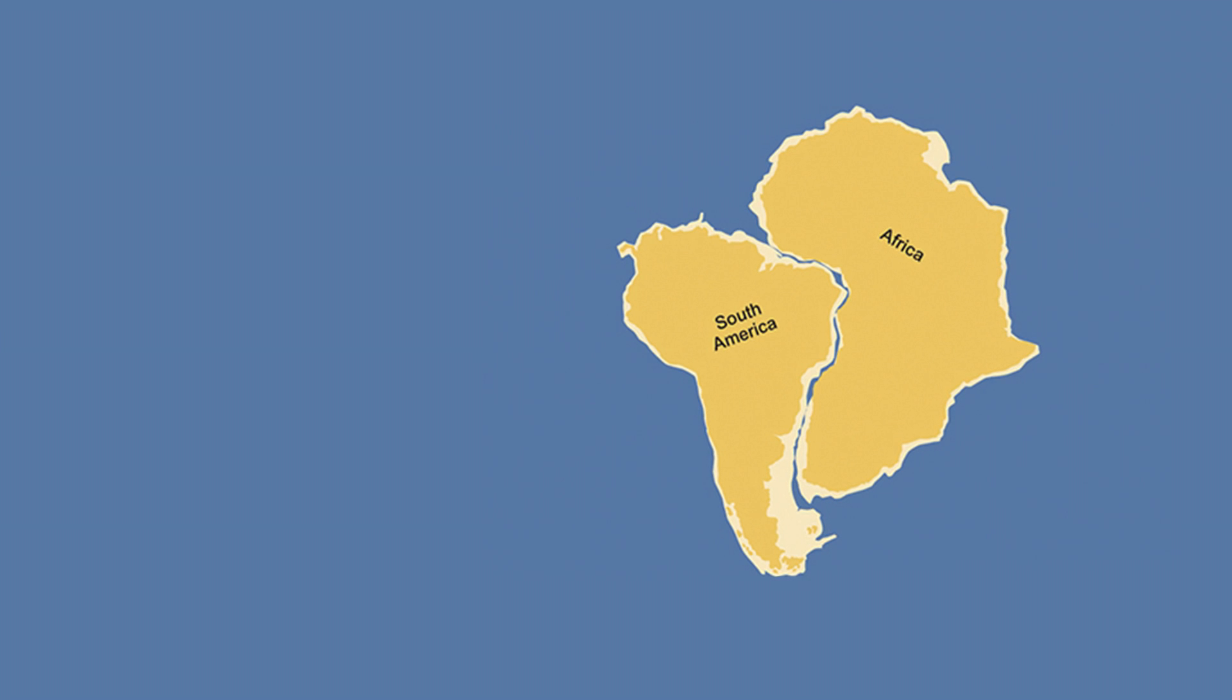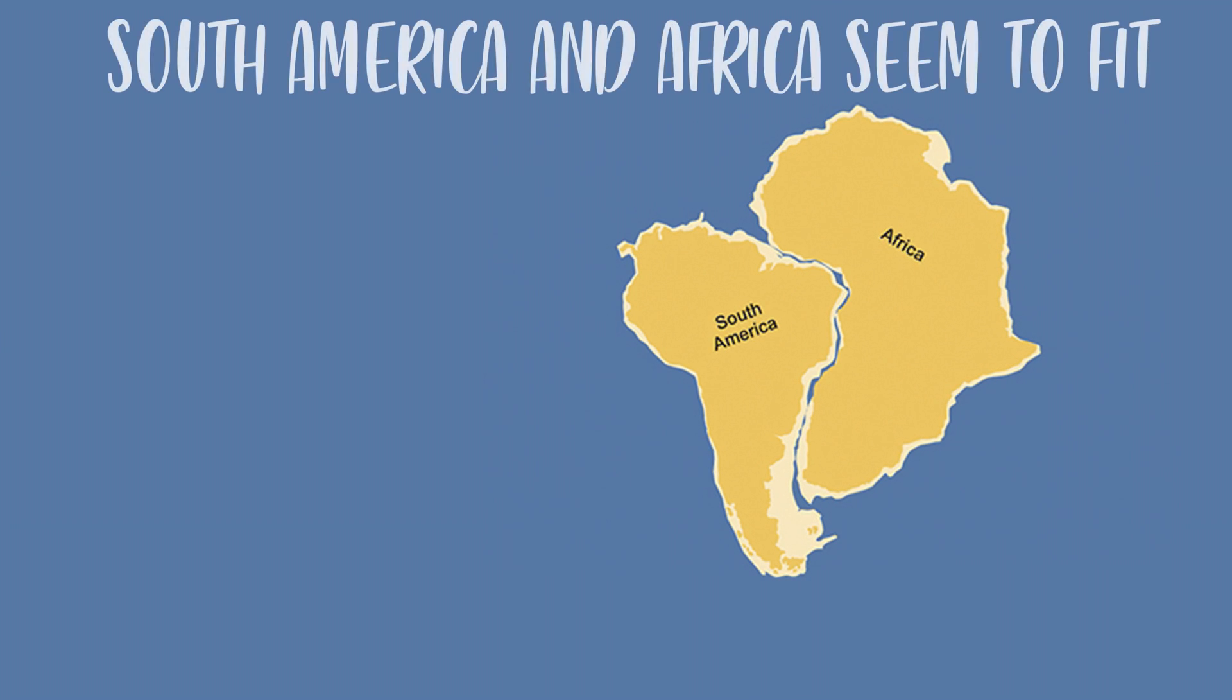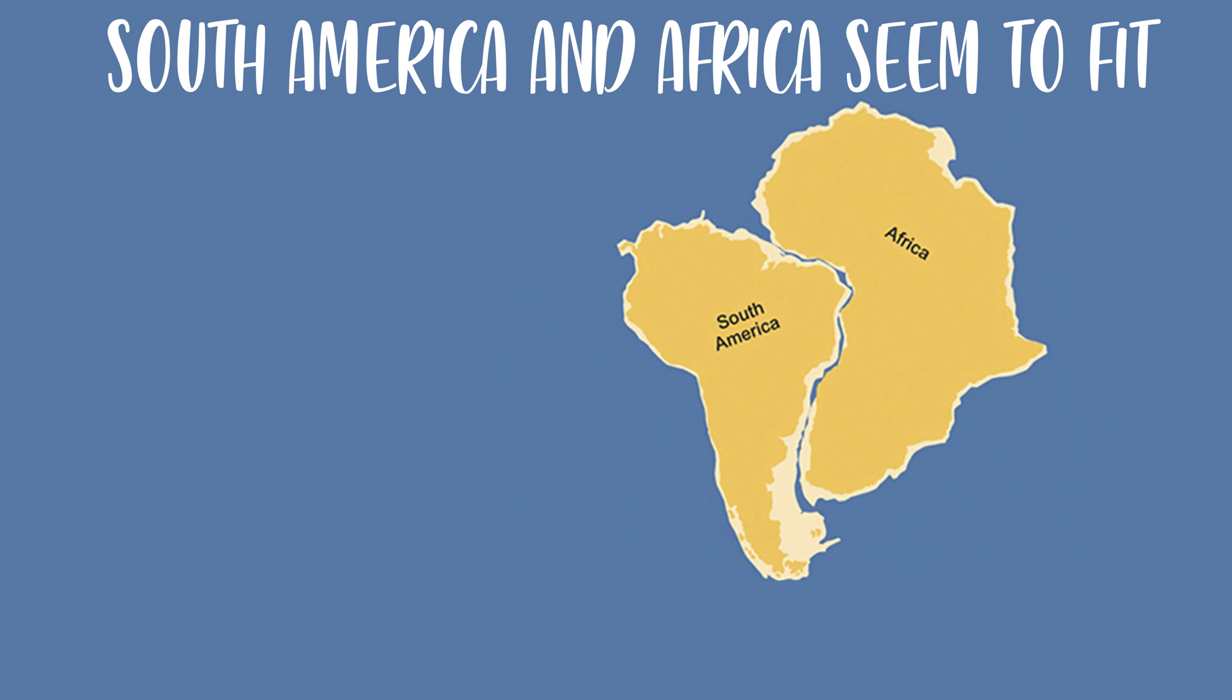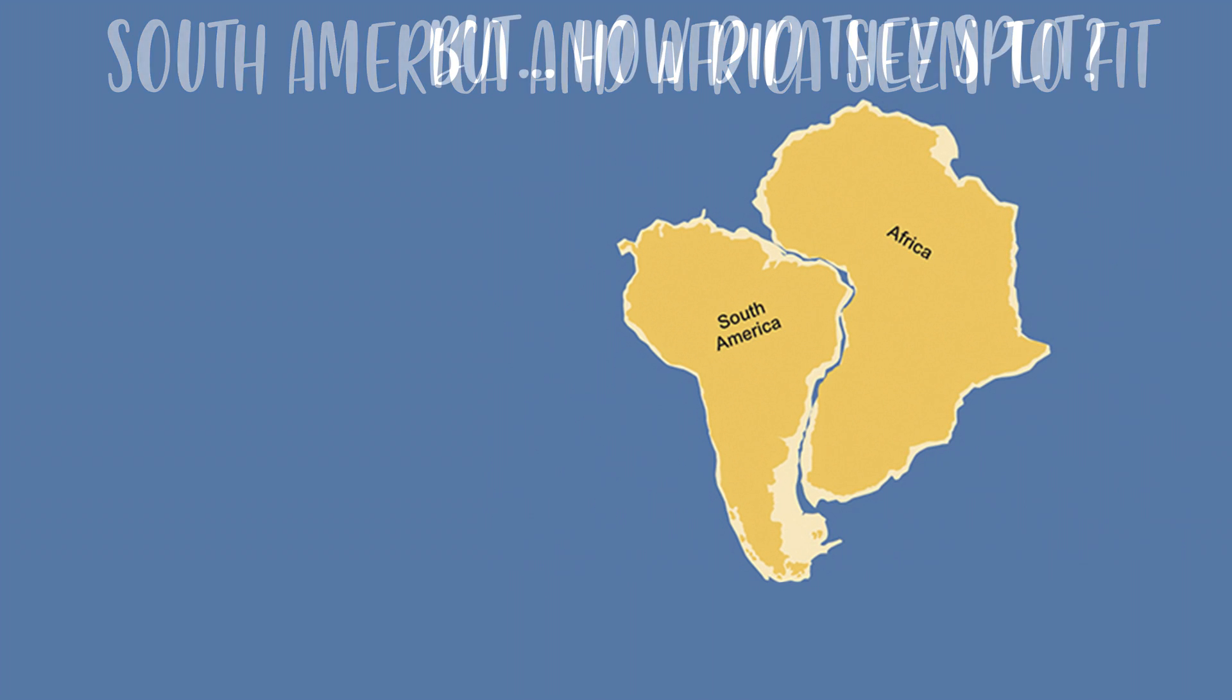There already had been some scientists who proposed that, in the past, South America and Africa may have formed a single continent, but many others did not find it logical. Continents, like the ocean floor, are huge sections of rigid rock, and if the rock is rigid, it can't move, so there was no way to explain this kind of movement.